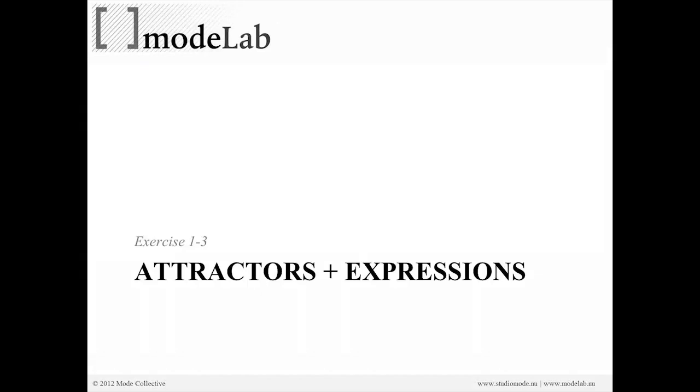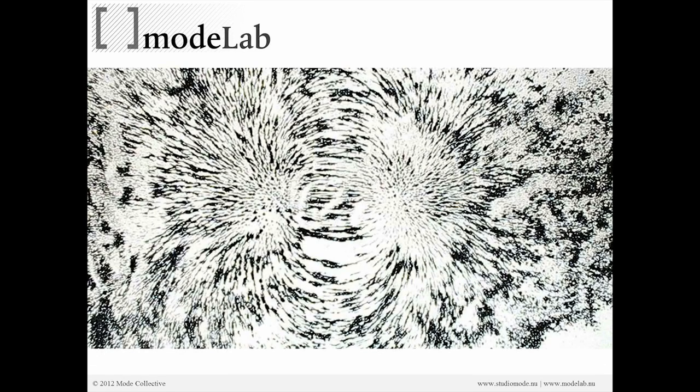Now we're going to move into attractors and looking at how we might, with attractor objects, work with expressions to cause influence within a collection of elements. Here's our reference: metal filings on a table with a couple of magnets. Attractors are a really great way to cause difference in a grid with a decaying value attached, so that as you move away from the attractor, you get less influence. It's the same concept as using the fields, although we're going to be doing it manually with vector math.